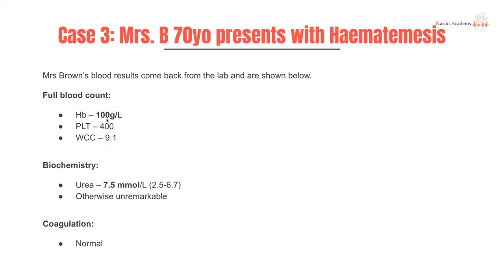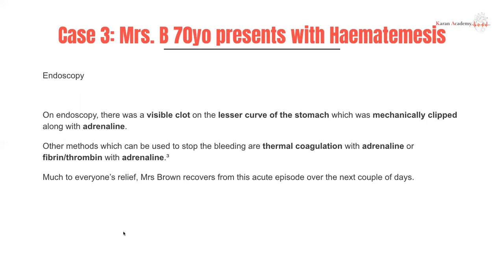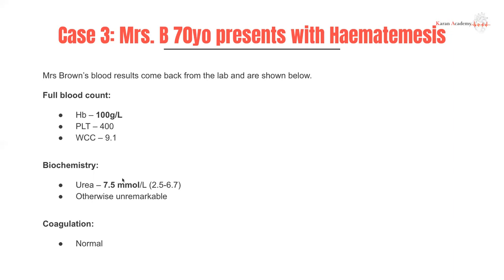Her bloods come back: her hemoglobin is slightly low but not too bad. Her urea is elevated — again, we are not surprised. Otherwise unremarkable. Coags are normal. She then has an endoscopy: there is a visible clot on the lesser curvature of the stomach, which was mechanically clipped and injected with adrenaline — going for dual therapy. Some other methods to stop bleeding are thermal coagulation or fibrin therapy. Mrs. Brown recovers well from this acute episode over the next couple of days.